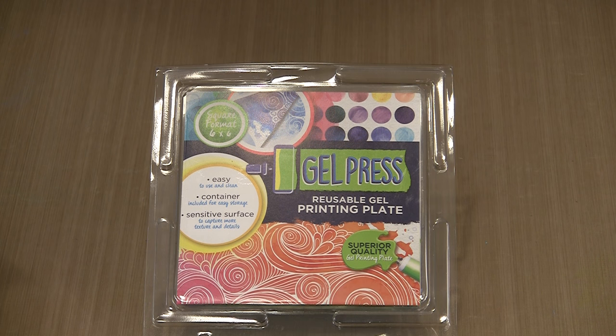I'm back at it working with the 6x6 gel press plate, this time exploring ways to add texture to paint before pulling a print. I'll also show you how to print layers that have dried on the plate to create really interesting patterns and texture.